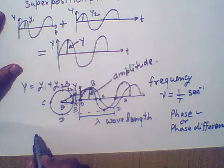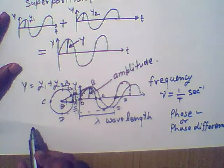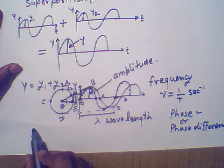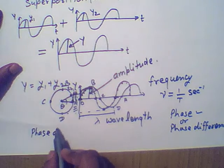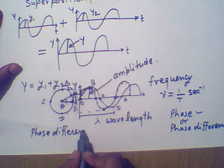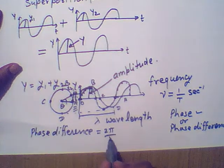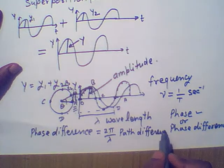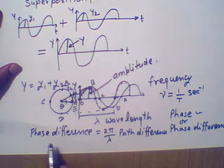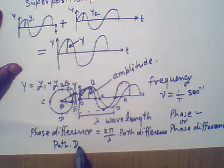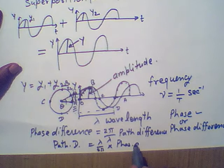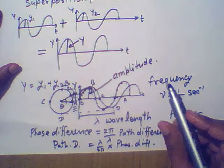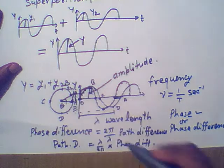If there is a phase difference, there will be a path difference — both are connected. Phase difference is equal to (2π / λ) multiplied by path difference. Conversely, path difference equals (λ / 2π) multiplied by phase difference. So if we know the phase difference, we can find the path difference, and vice versa.